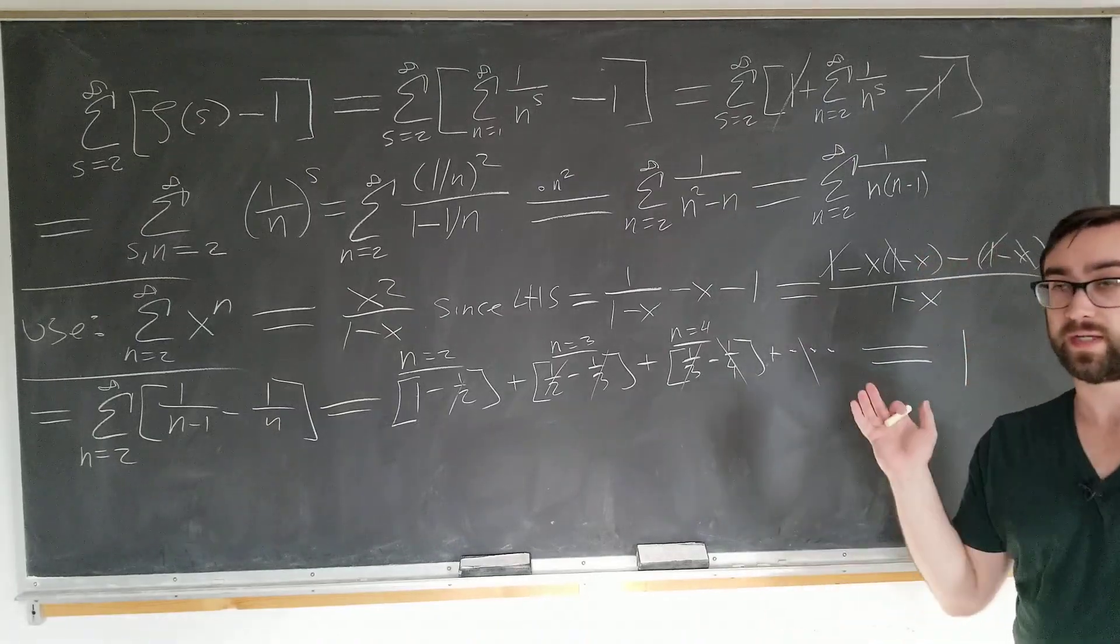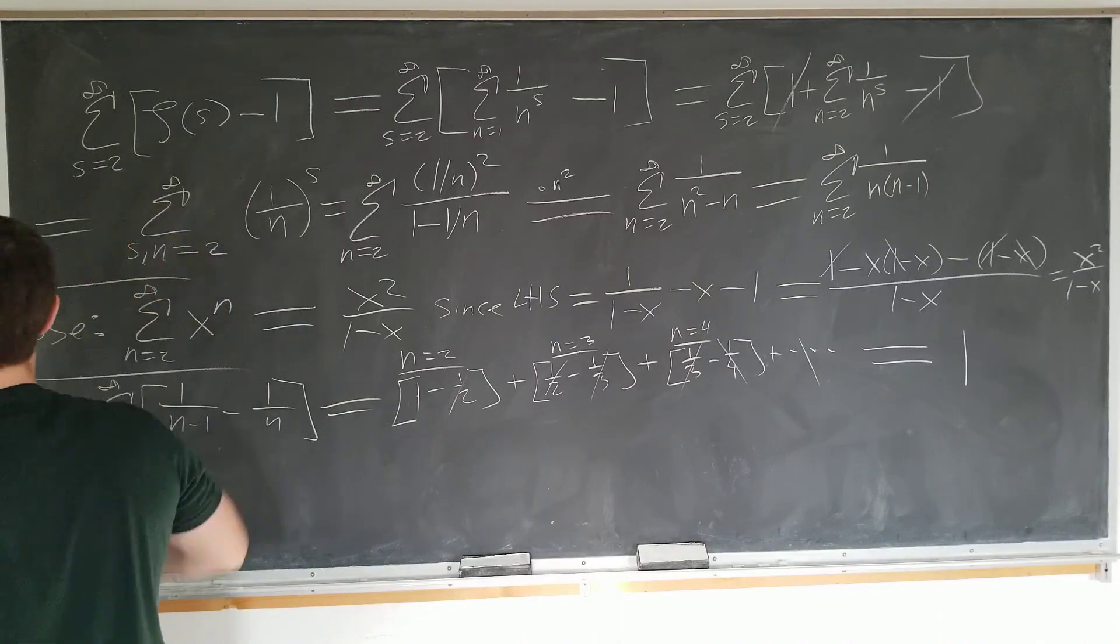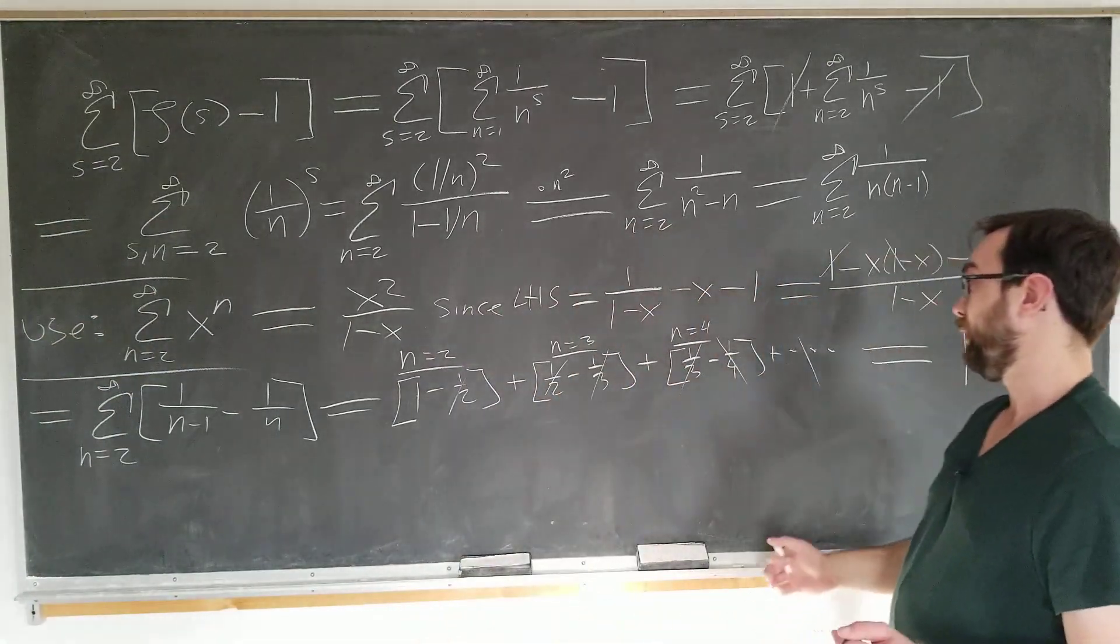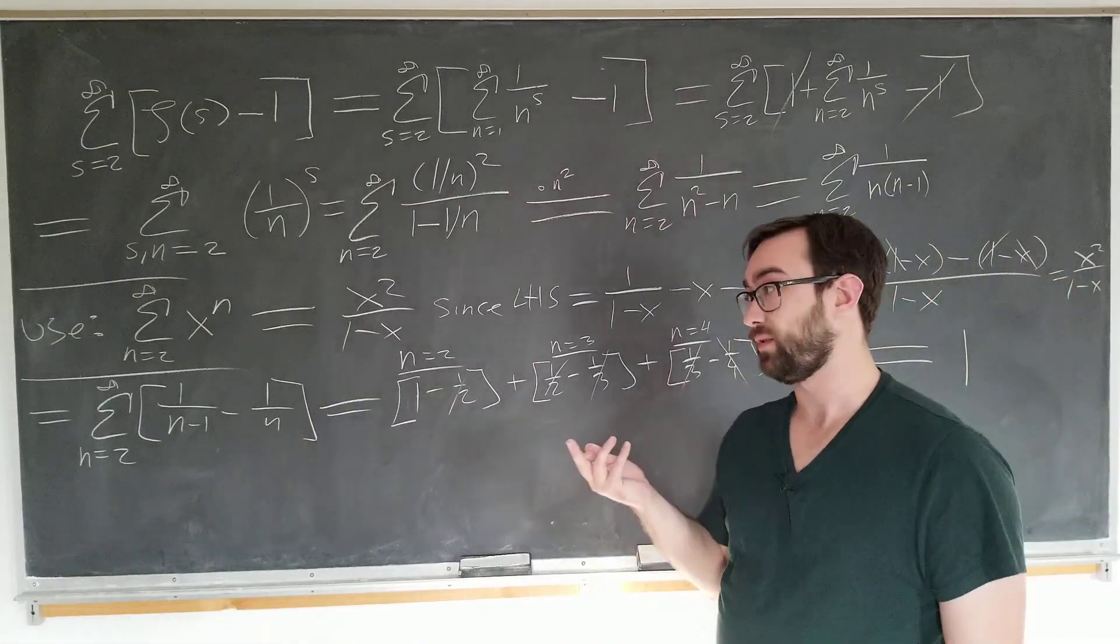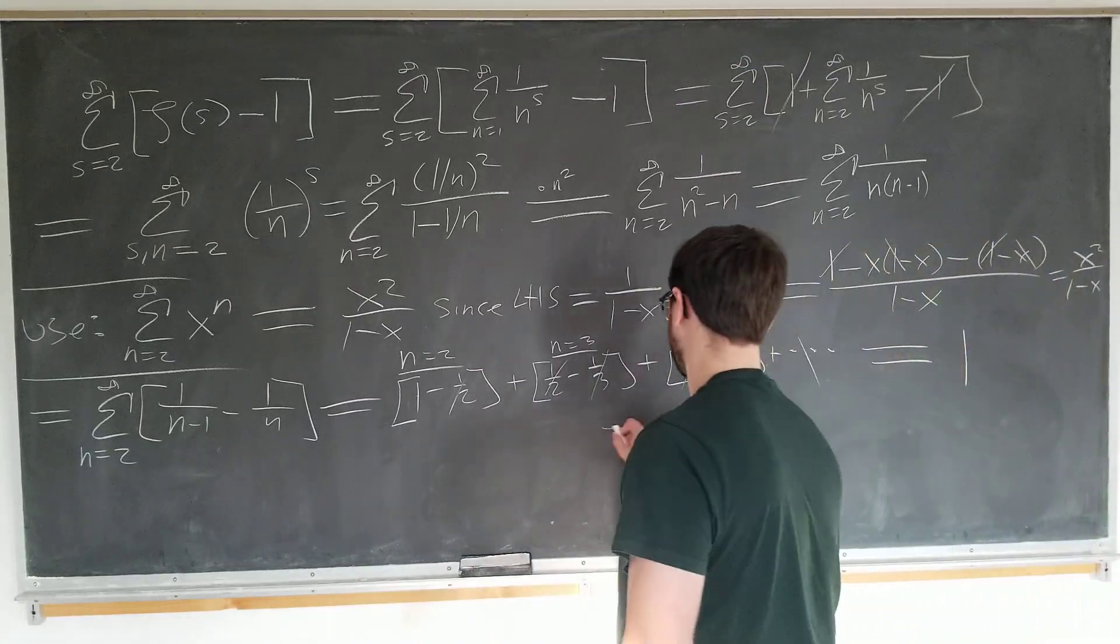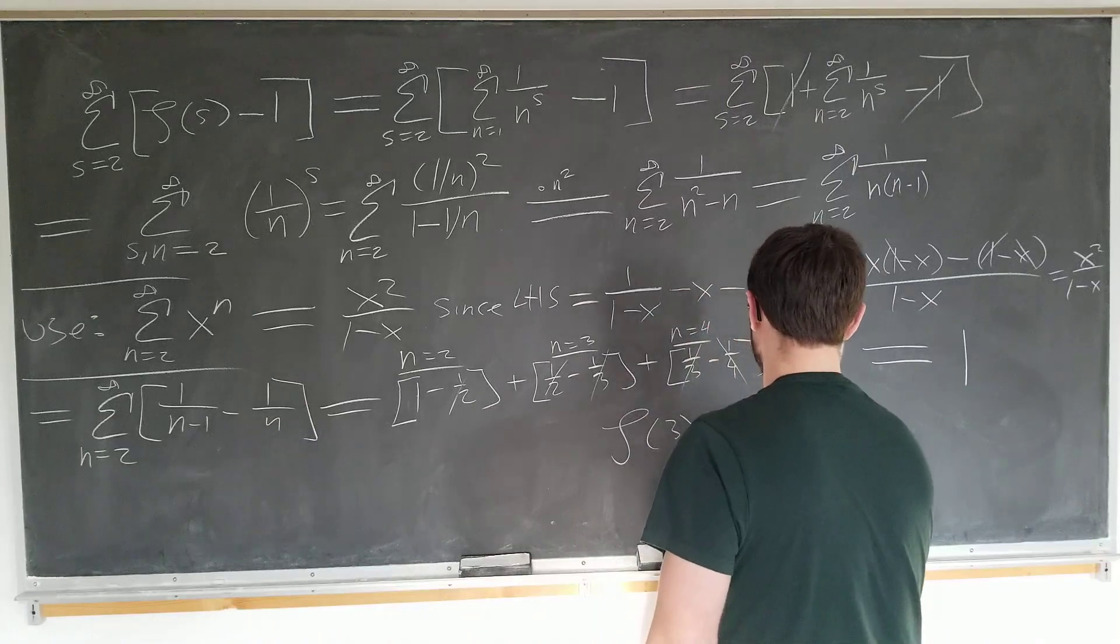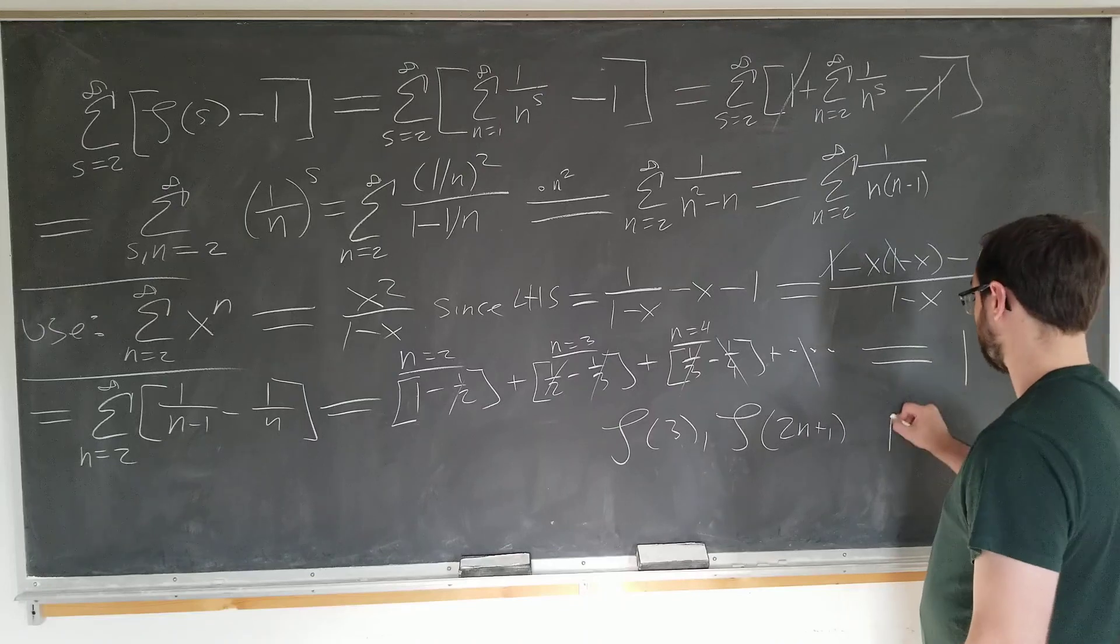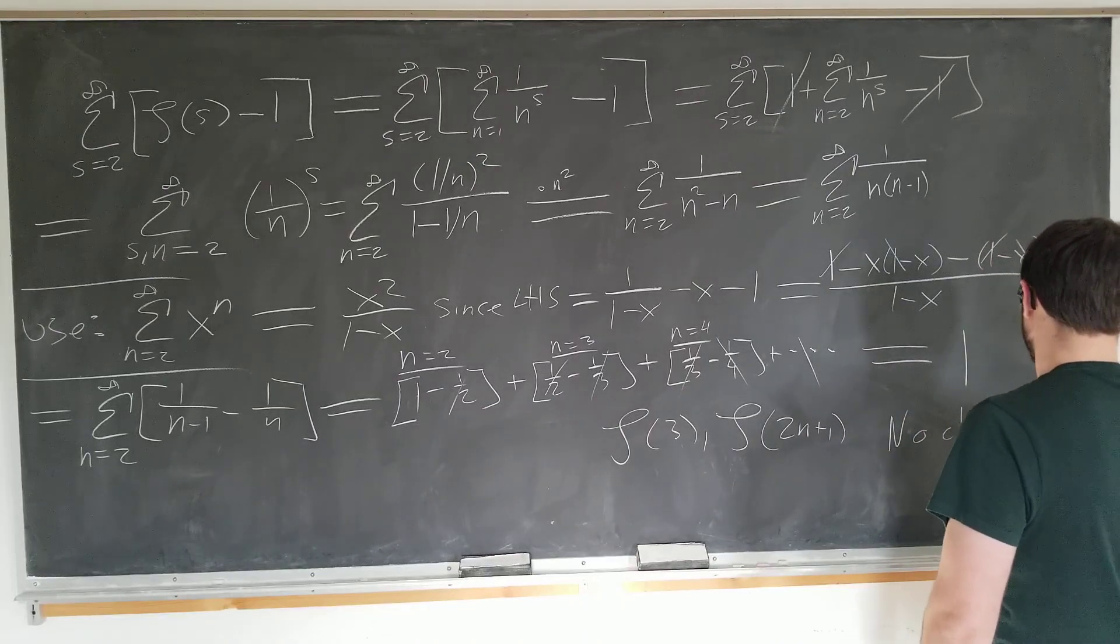Which is very surprising, I would say. We have a sum of sums here. We have a sum of zeta functions, which are sums themselves. And we can find a closed form solution. But more surprising, it's such a simple solution. And it's also surprising since values like zeta 3 and in general zeta of 2n plus 1 don't even have a closed form in the first place. At least not one that we know.